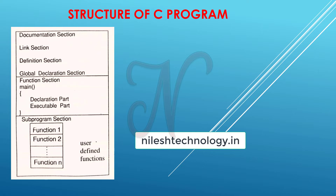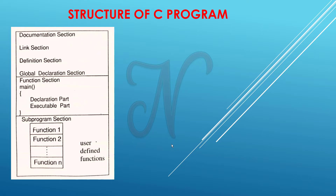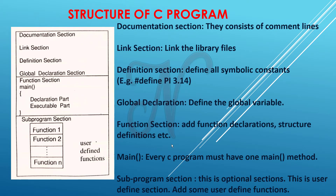The link section links the library files — that is the header files and other user files. The definition section defines all symbolic constants, for example: #define pi 3.14. The global declaration section defines global variables. In the function section, we add the function declaration or structure definition.